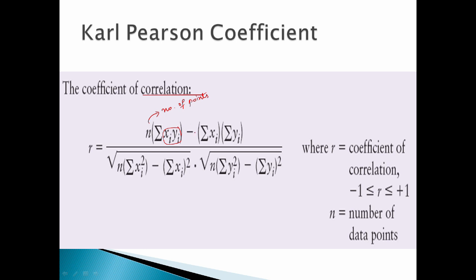Minus summation of xi into summation of yi, divided by root of n. The number of points, n, times the summation of xi squared. xi squared is one term, then we take the summation of xi squared.